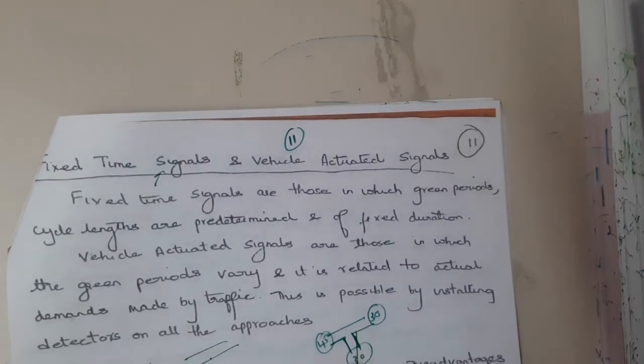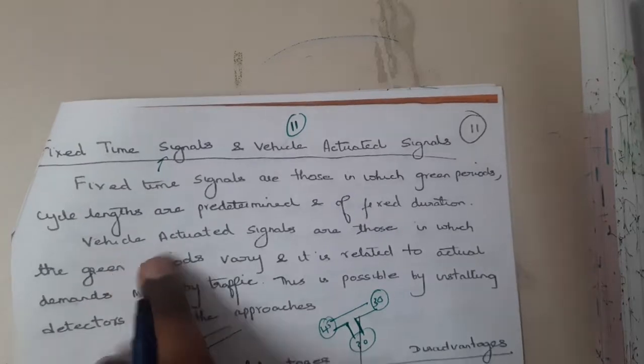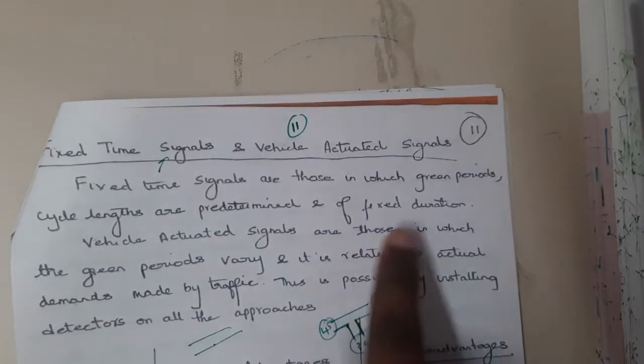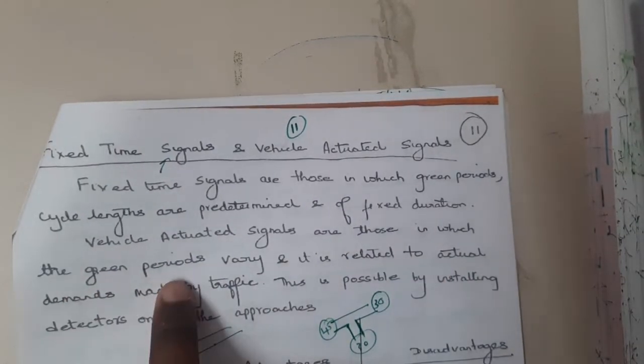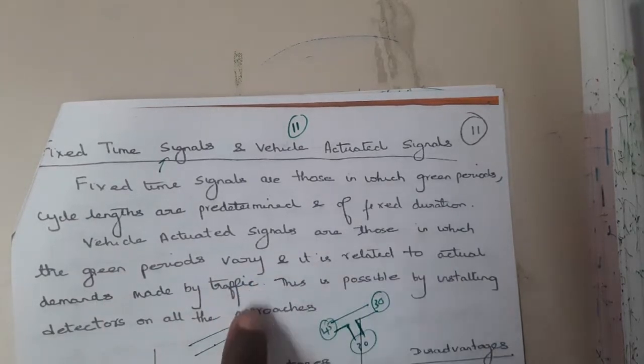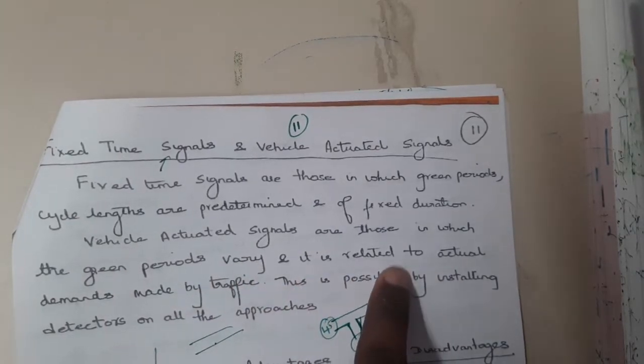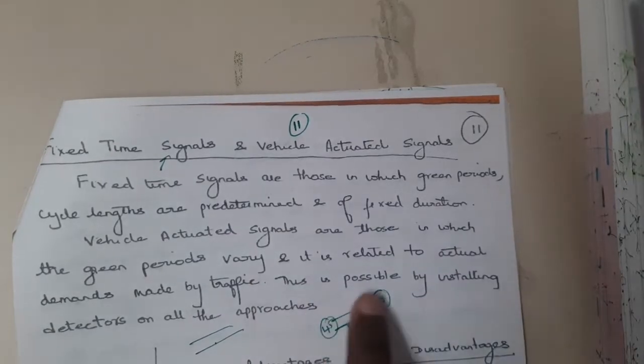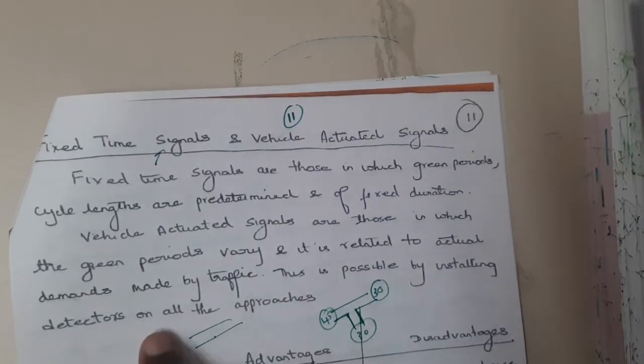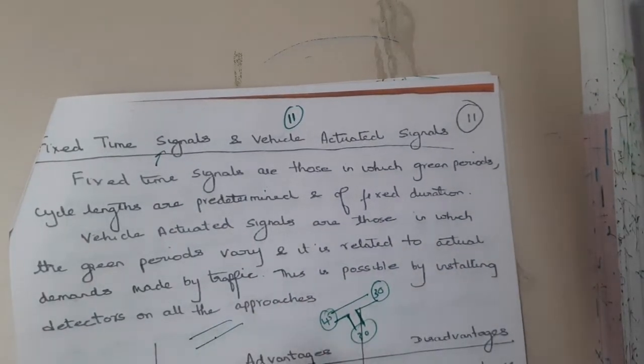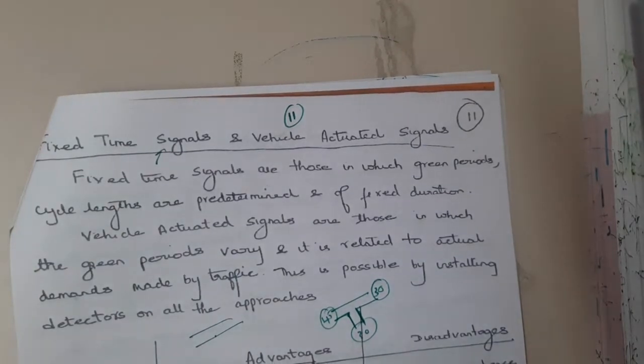Vehicle actuated signals are those in which the green periods vary and it is related to the actual demand of the traffic. This is possible by installing detectors on all the approaches.